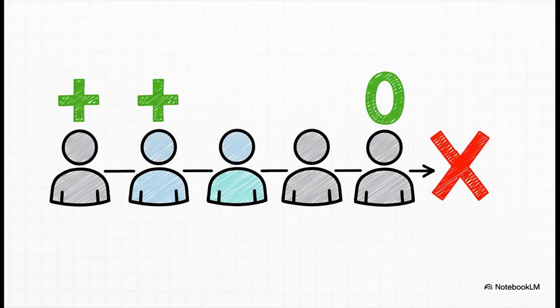That right there is the big rule, the main takeaway. If your goal is to maximize total output, you keep adding workers as long as their marginal product is positive, even if it's just one extra apple. The second their contribution hits zero or goes negative, you stop. That's the rule.